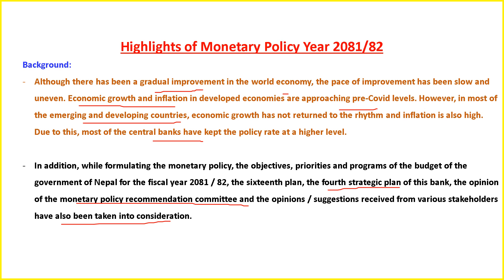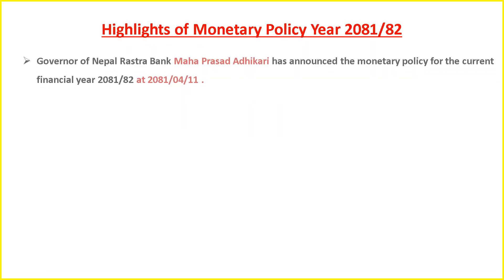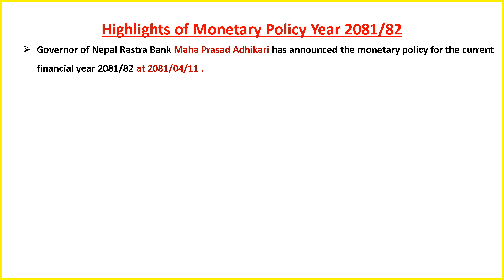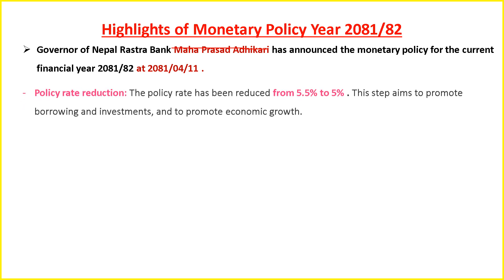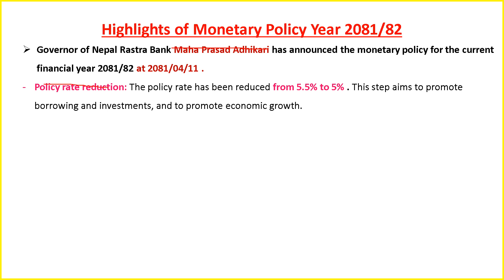Now let's see the major highlights of monetary policy of fiscal year 2081/82. Governor of Nepal Rastra Bank, Mahaprasad Adhikari, has announced the monetary policy for fiscal year 2081/82. Regarding policy rate deduction, the policy rate has been reduced from 5.5 percent to 5 percent. This step aims to promote borrowing, investment, and economic growth.